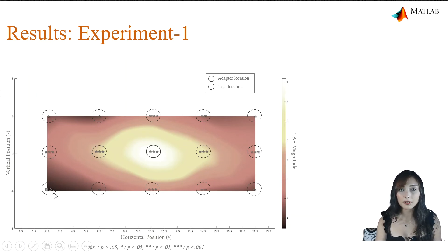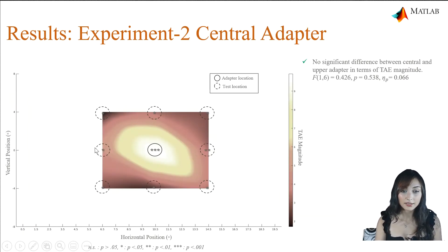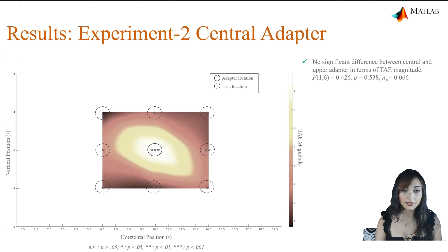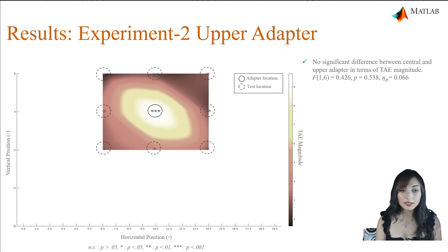The results of experiment 2 replicated it. This is the heat map for the results of the central adapter, and this is the results for the upper adapter. In both adapter conditions, we found significant spread of the tilt-after-effect at all test locations. And as you might notice, their spread pattern is very similar.